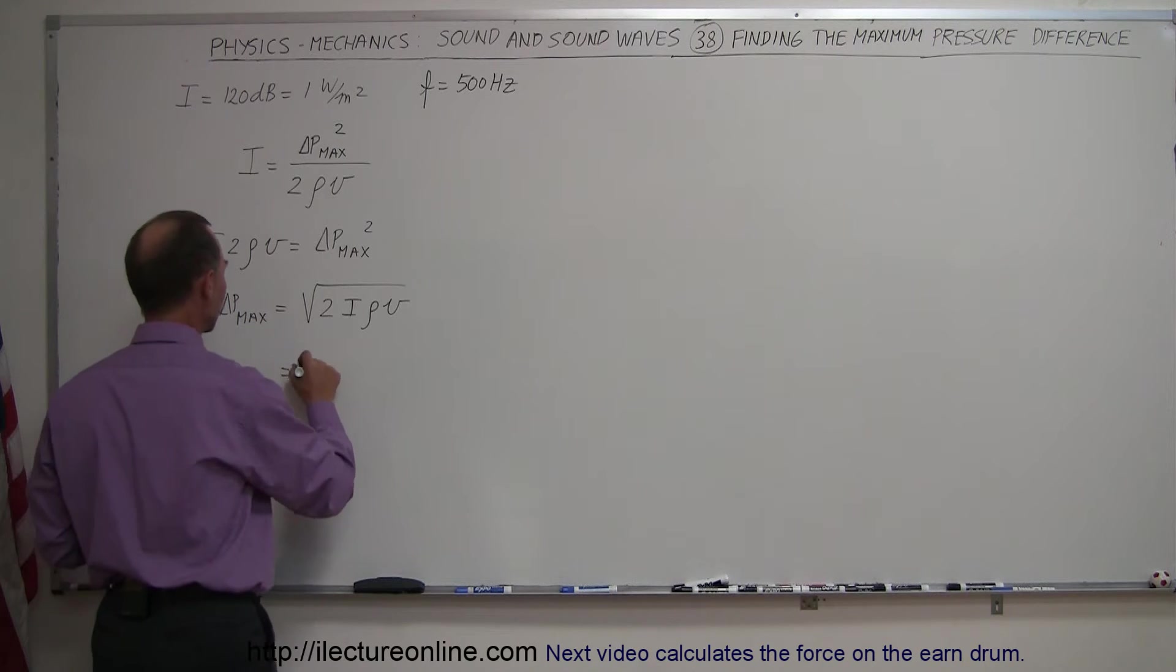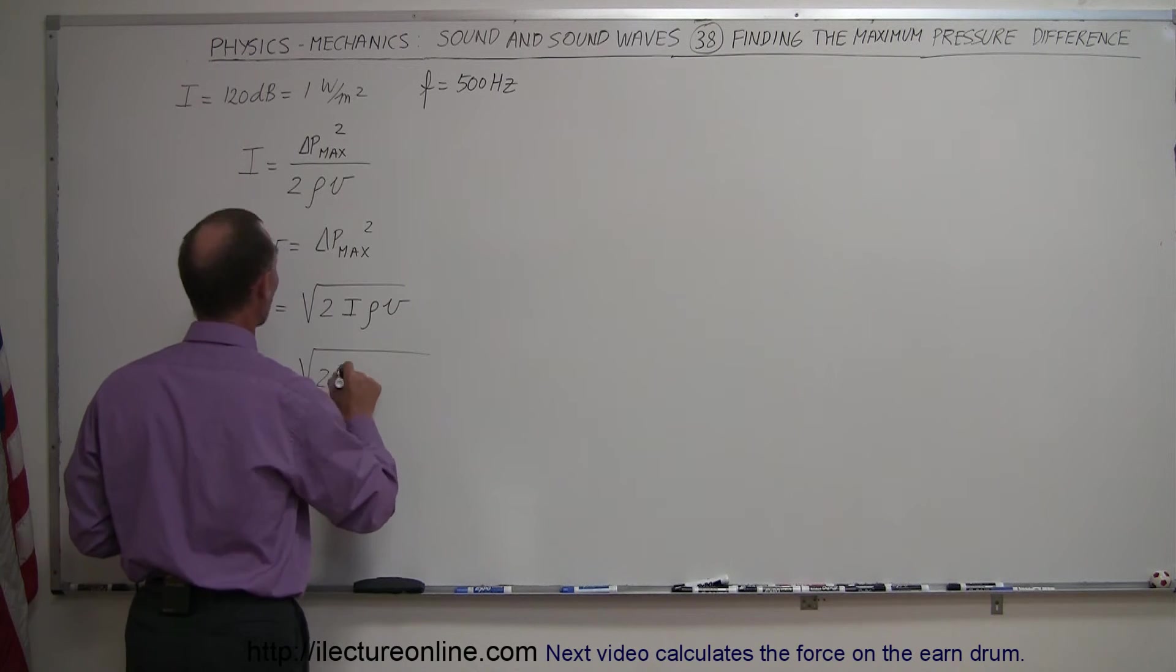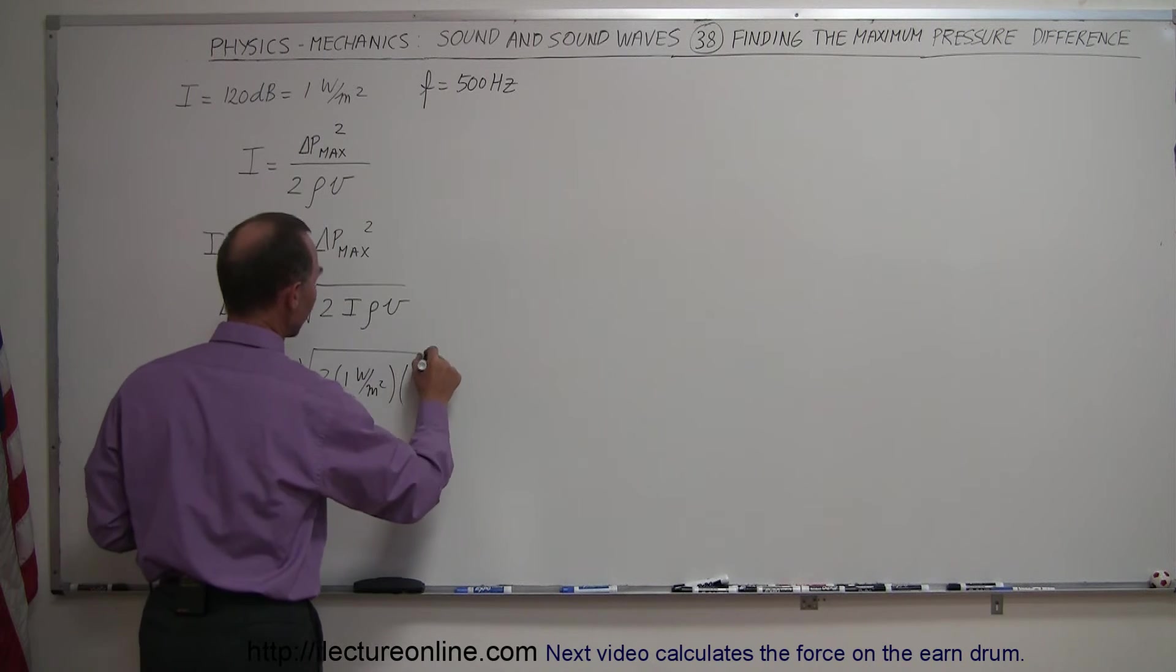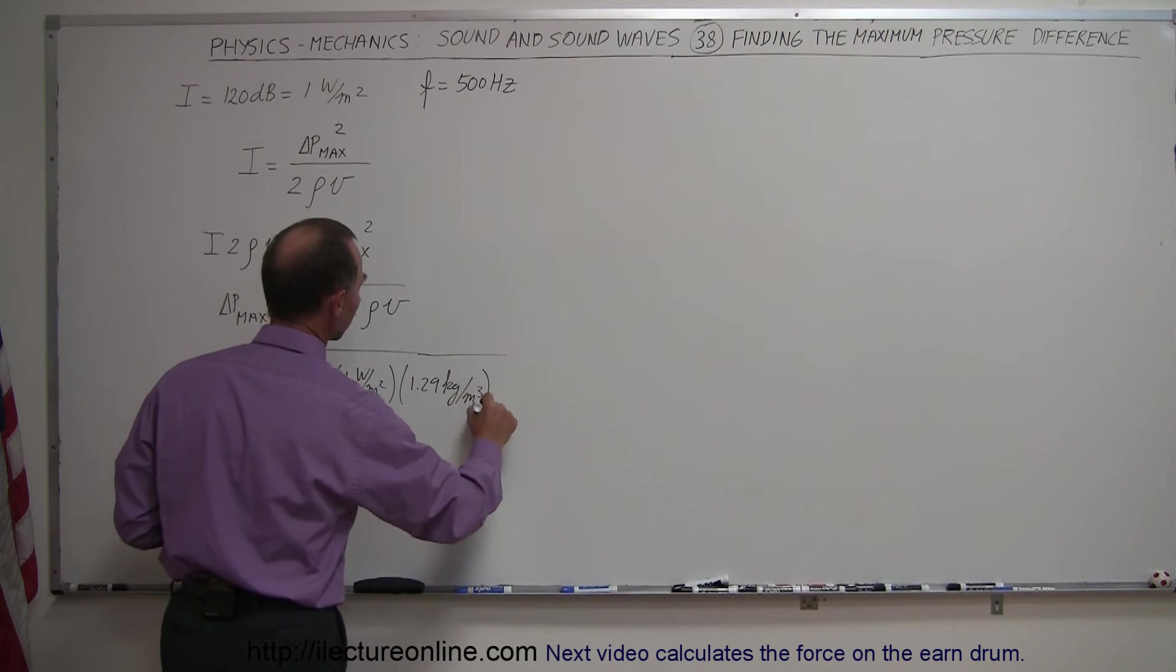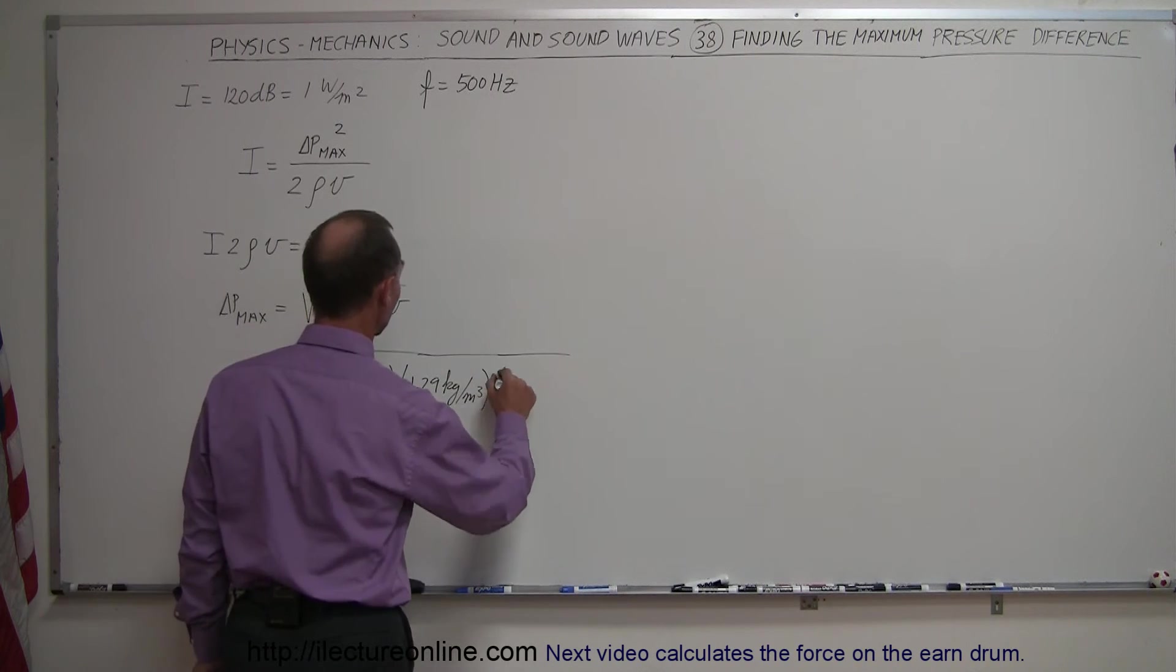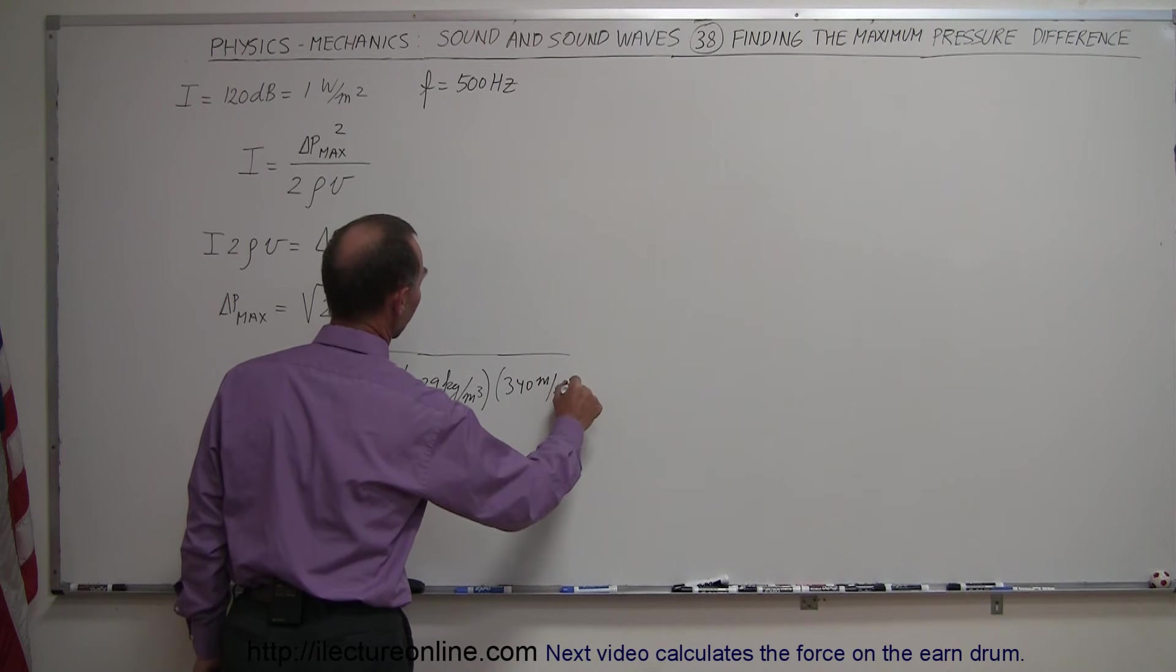So we take that as the square root of twice 1 watt per square meter times the density, which is 1.29 kilograms per cubic meter, and the velocity is 340 meters per second.